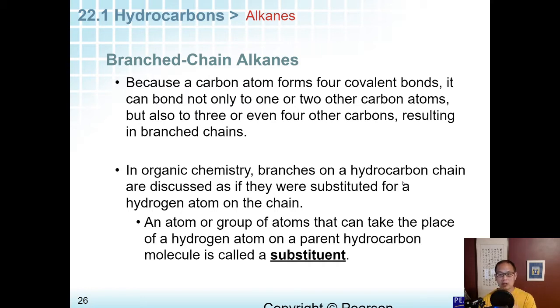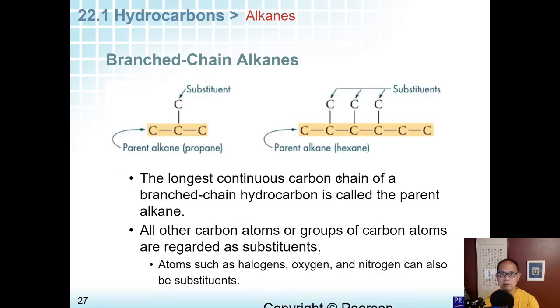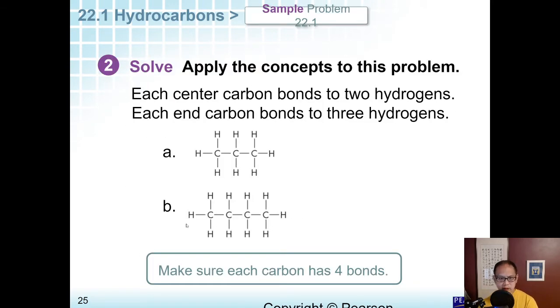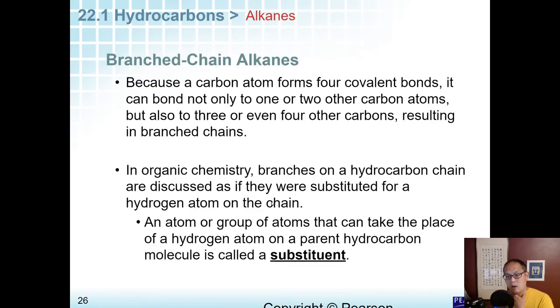In organic chemistry, branches on a hydrocarbon chain are discussed as if they were substituted for a hydrogen atom on the chain. Just imagine that we substituted one of these H's with another carbon. That's why when we're talking about branched chains, we call the carbons that are branching off substituents because they're substituting for what would normally be a hydrogen there.